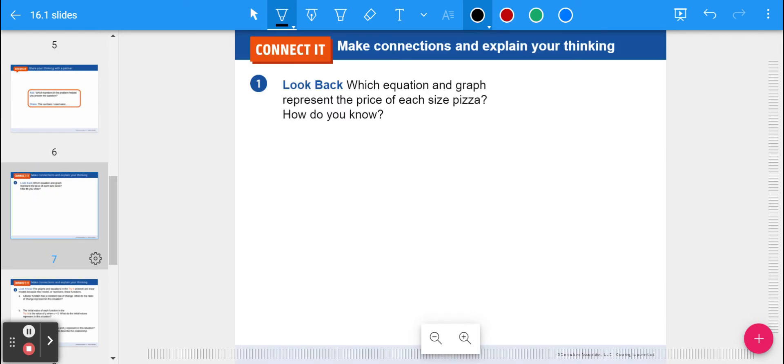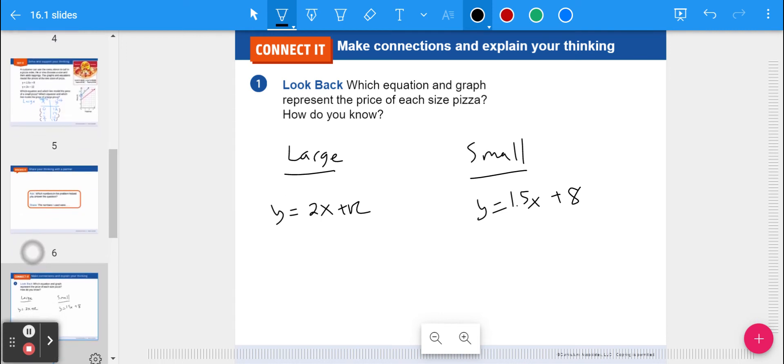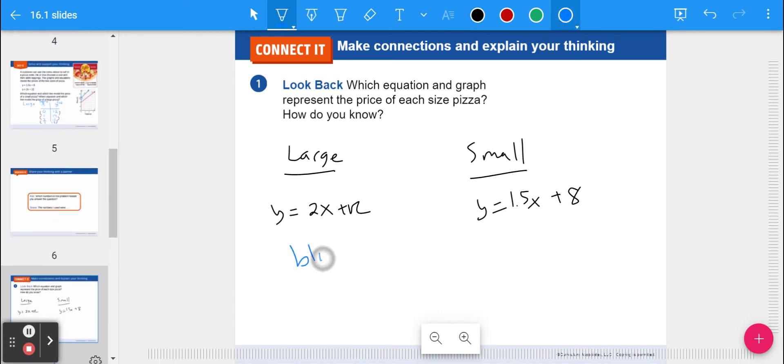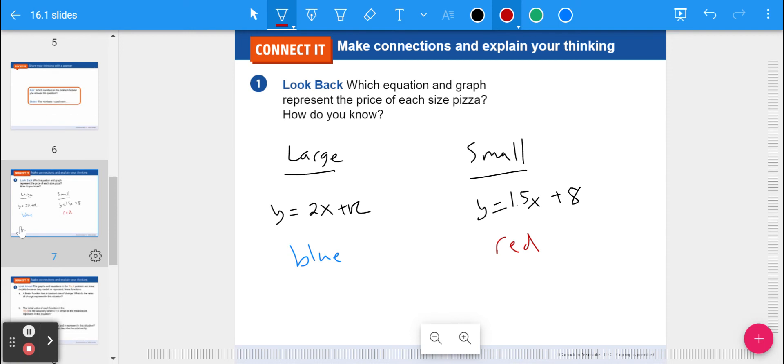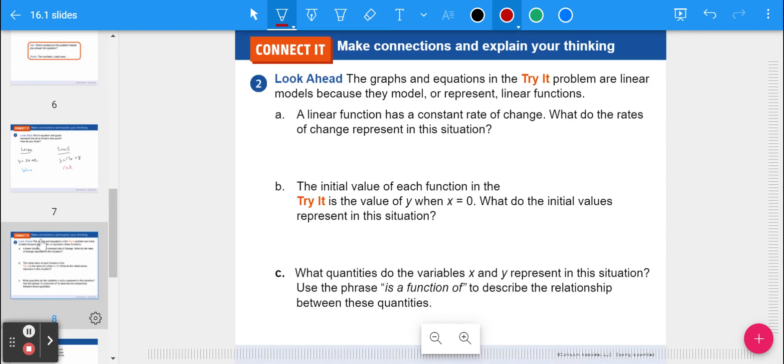Let's turn the page. Number one says which equation and graph represent the price of each size pizza? The large was y equals 2x plus 12, and the small was y equals 1.50x plus 8. On the graph, the blue represented the large, the red represented the small.